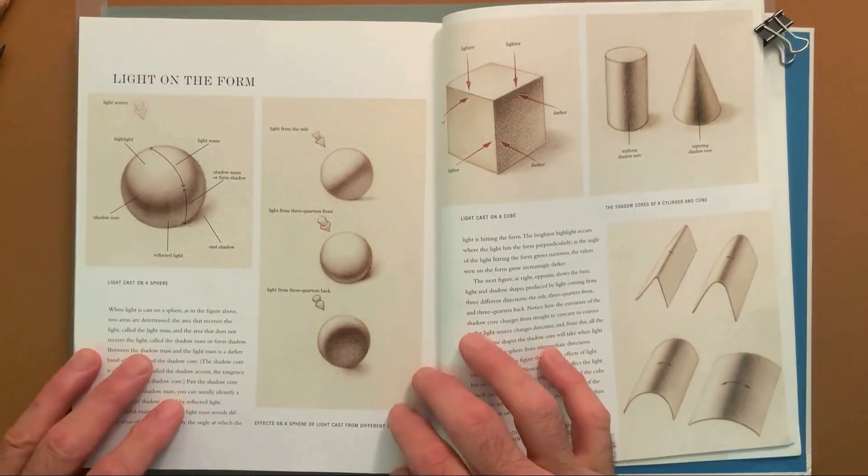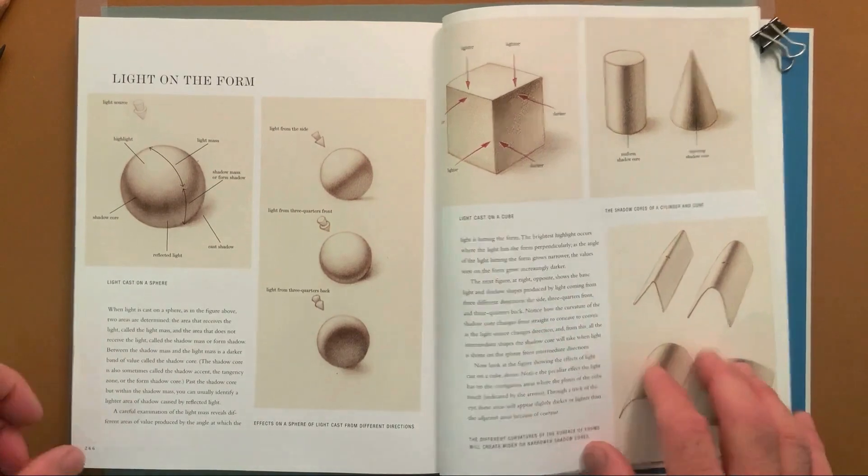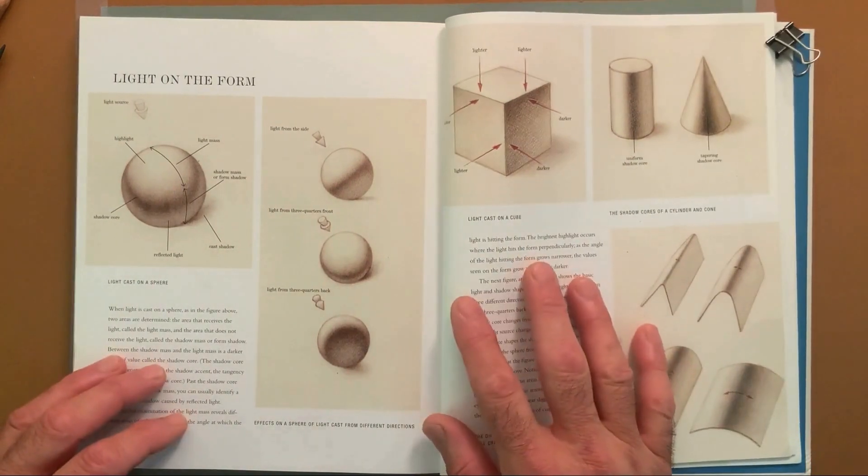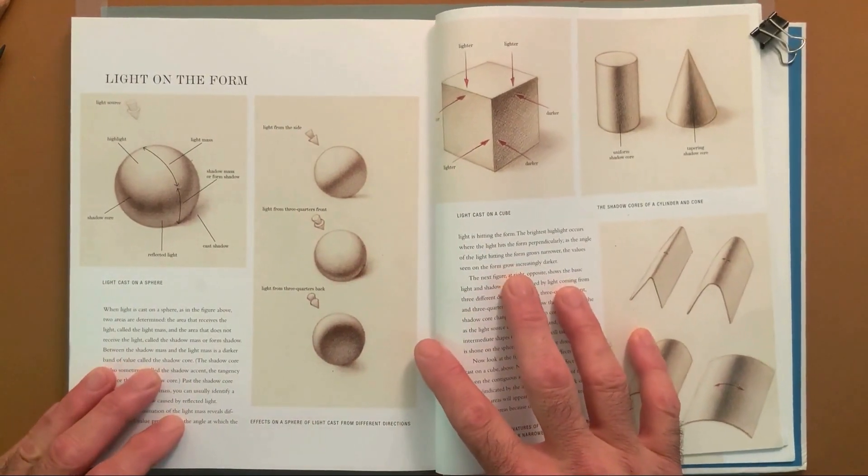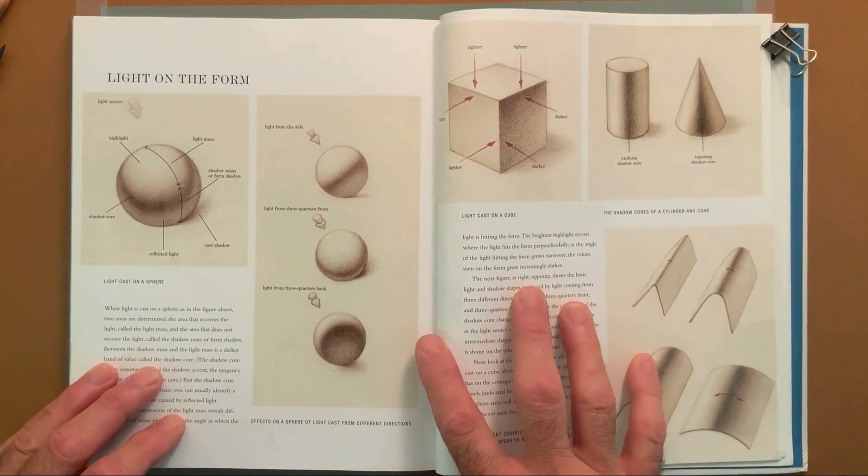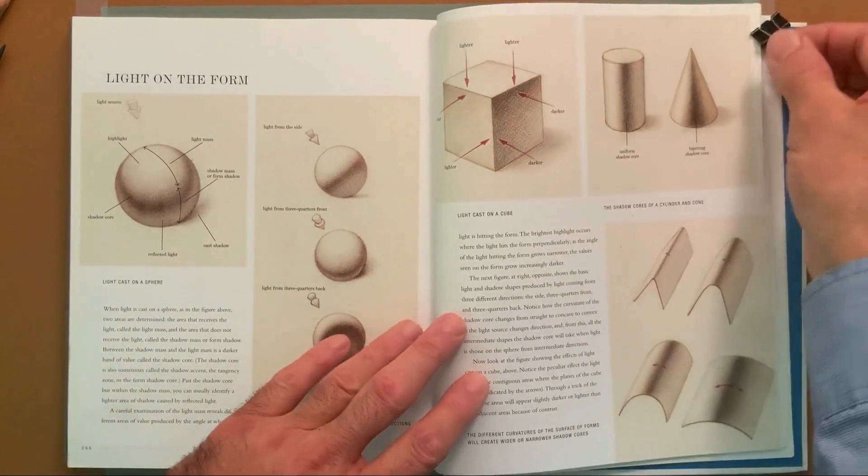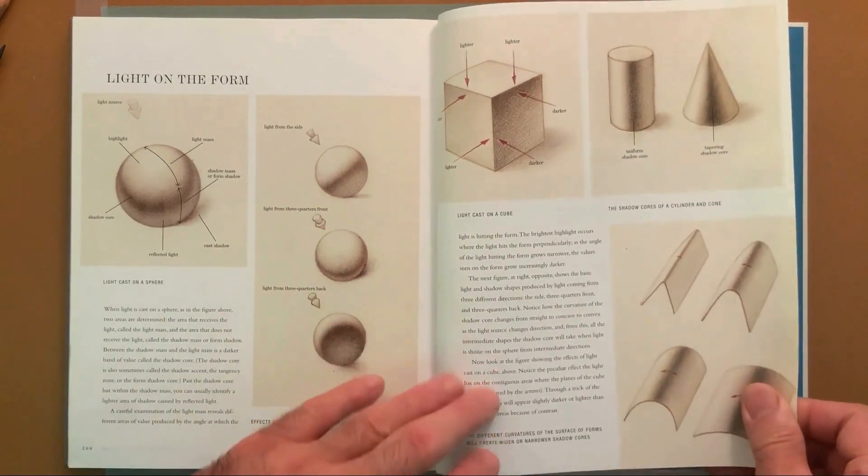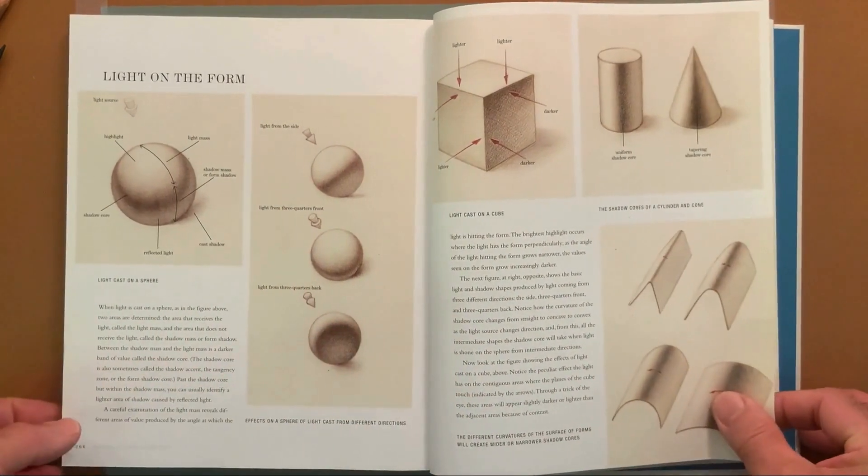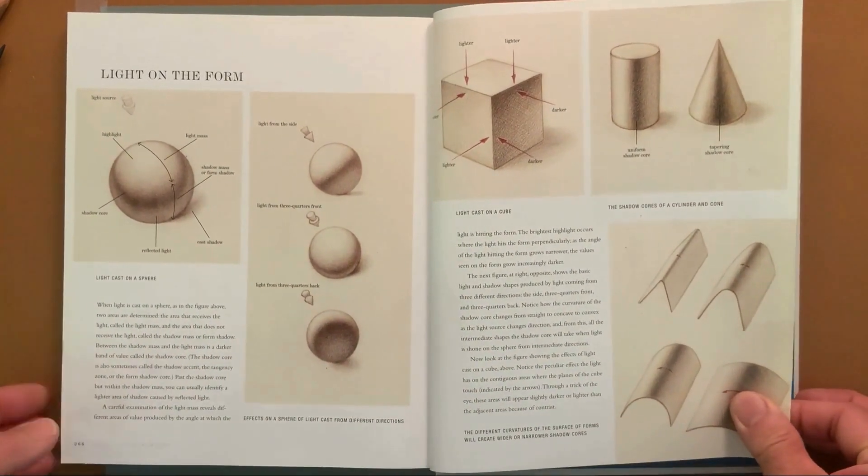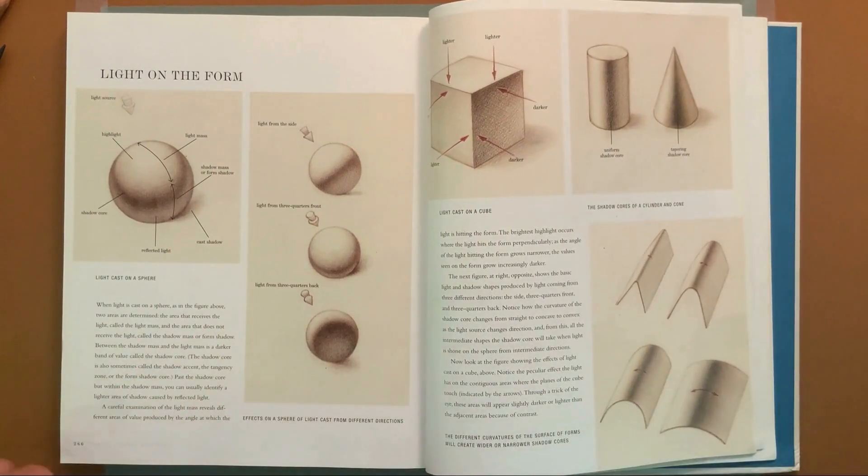So light on form is something that we really need to understand if you want to draw accurately, create realistic effects, and not go crazy trying to figure out why the things we copy don't come out the way we want them to.